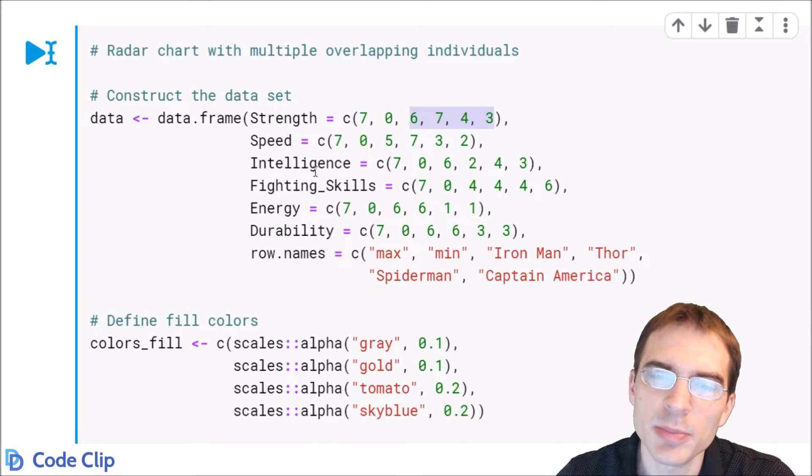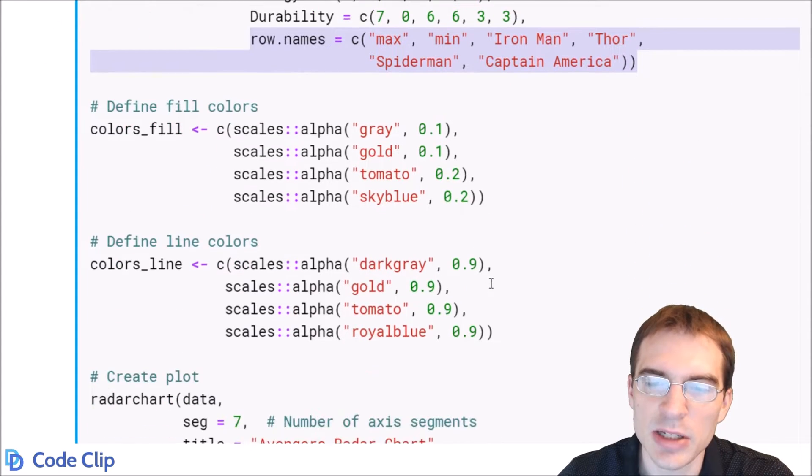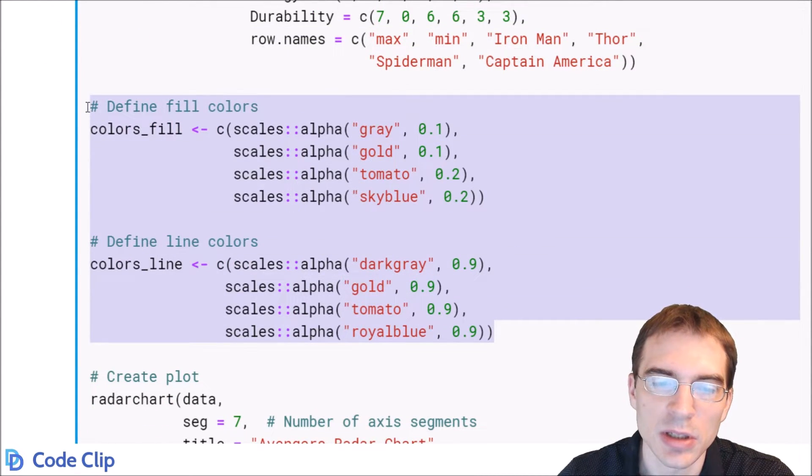And when you're putting multiple individuals on the same plot, you also have to include the row names. Next, we're just going to define some custom colors for the plot. You don't have to worry too much about this. These are just to make the plot look nicer when we make it.